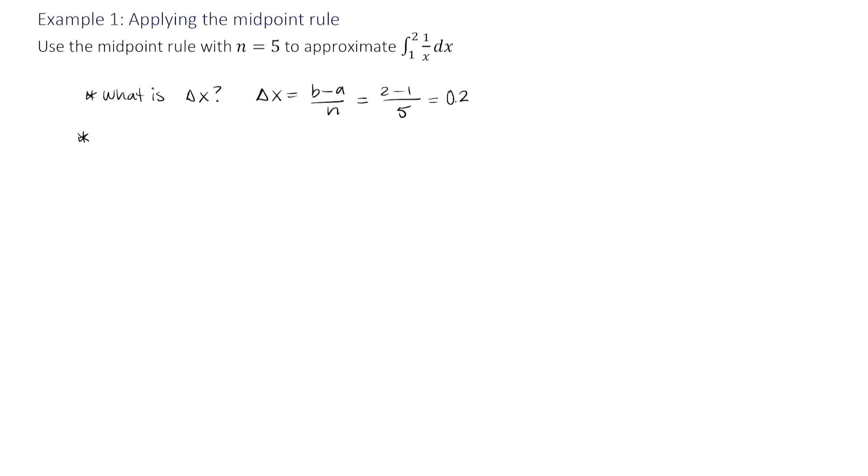So next, what are the midpoints? What are the values of x_i bar, i.e., the midpoints of each interval? For that, let's draw a sketch. That should help this be a little bit easier. We're going to start at 1, and then we're going to go all the way here to 2, since we're going from 1 to 2. And remember, we said that our delta x is 0.2, so that's 1/5. So let's break this up.